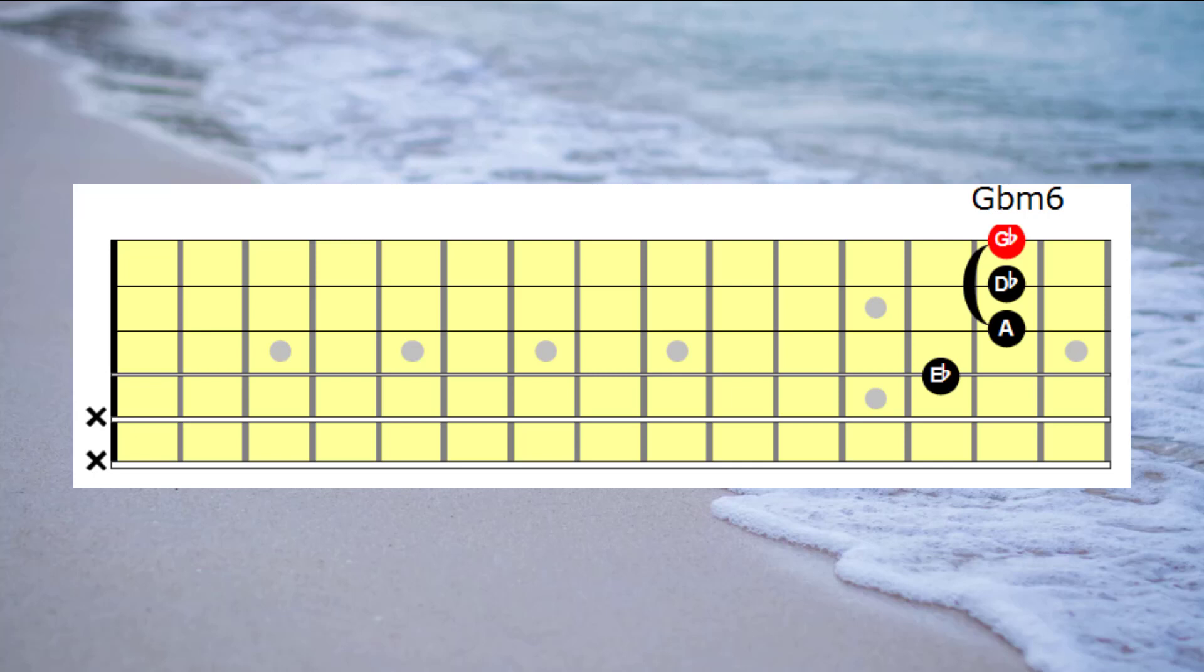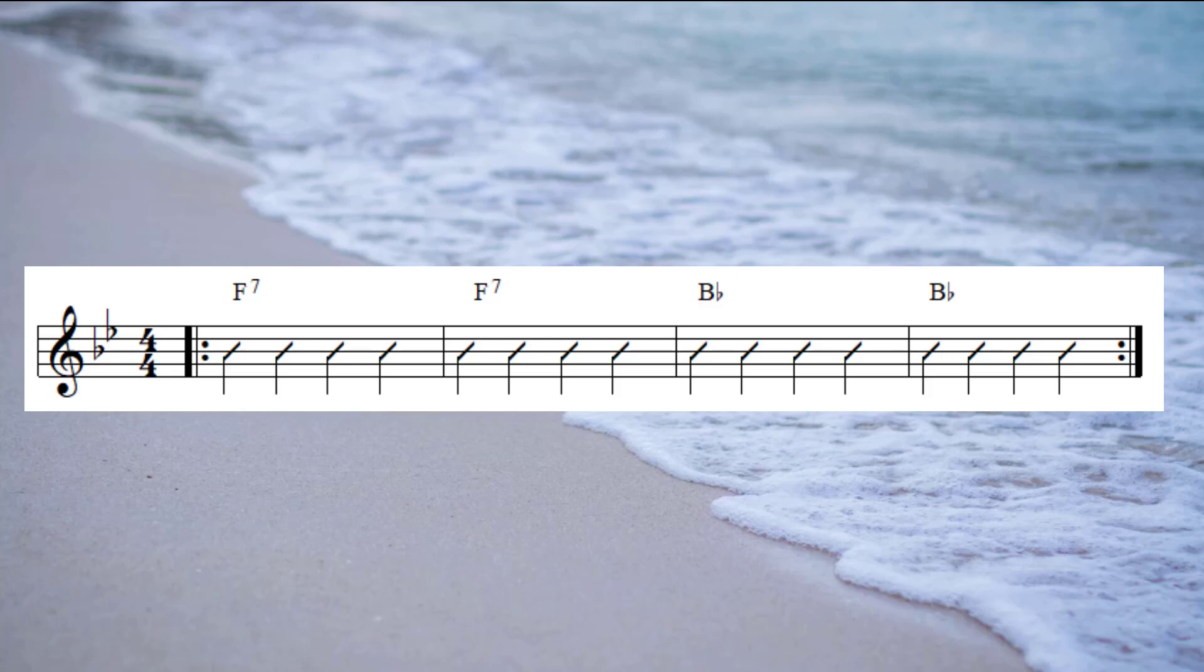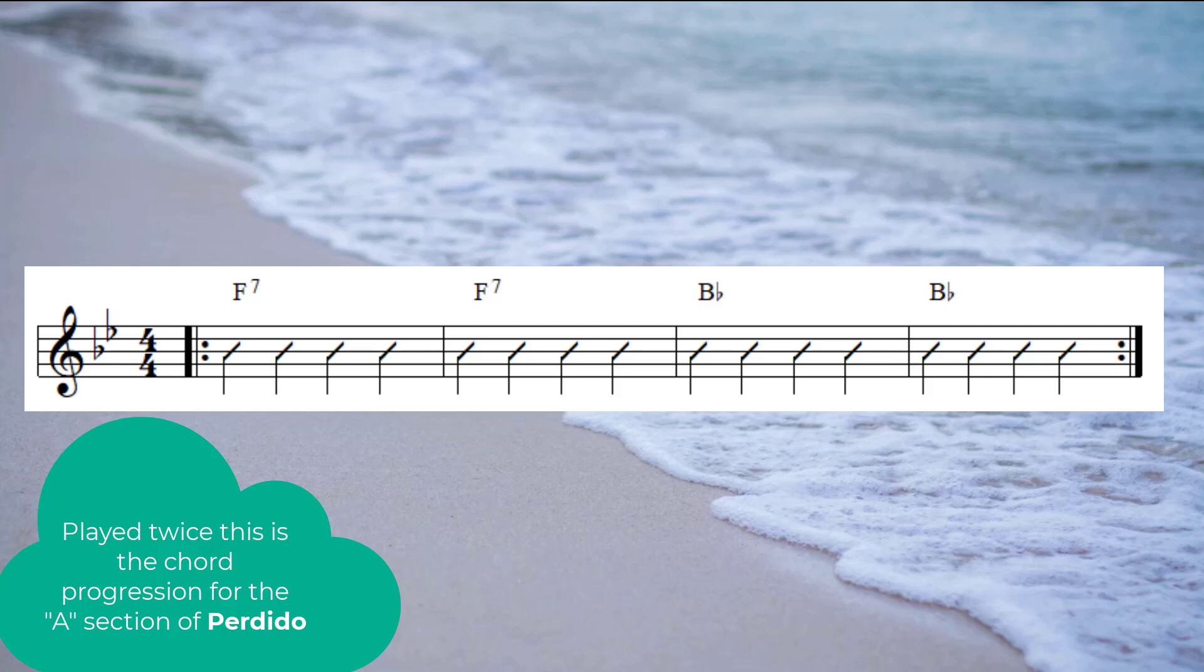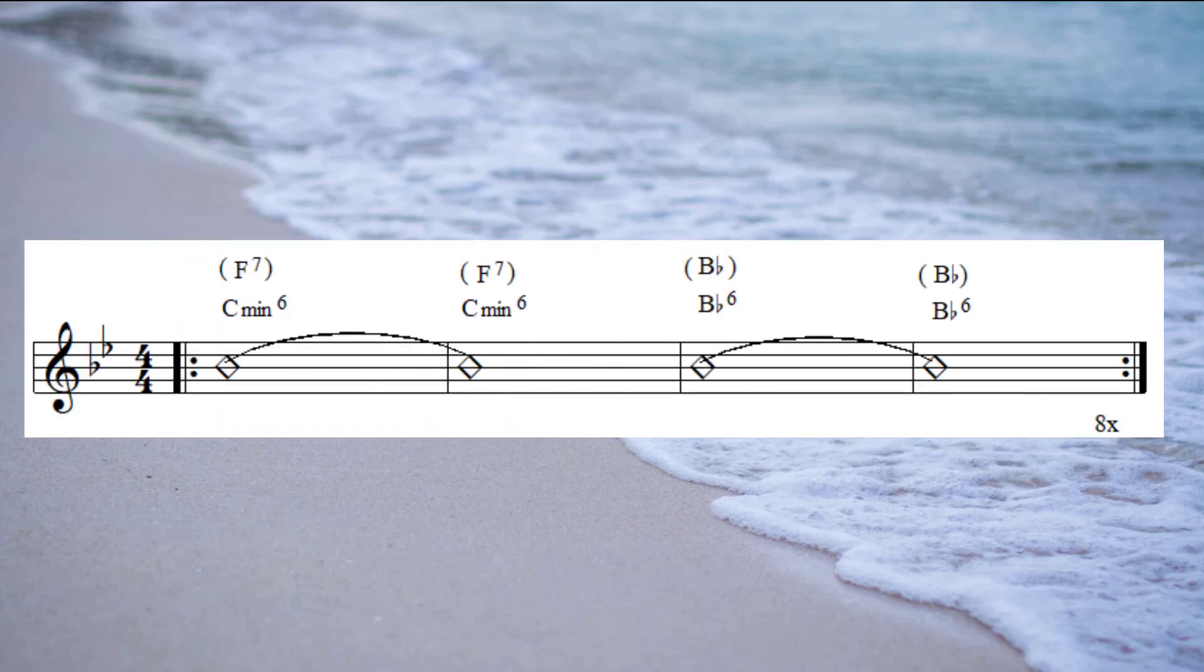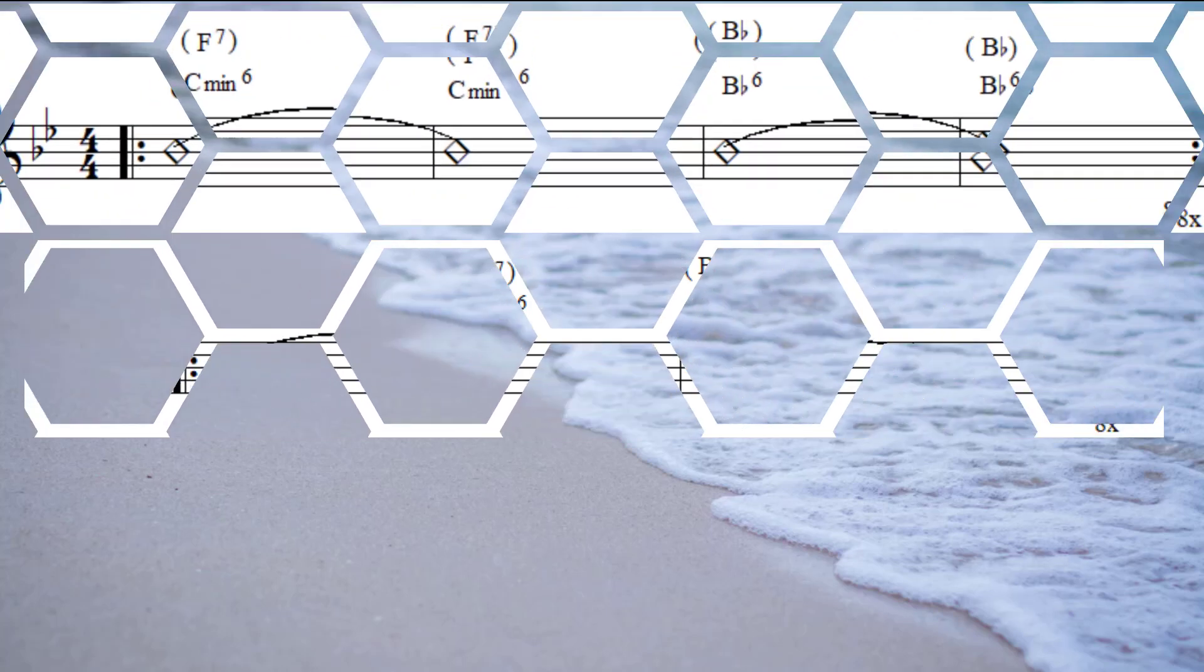And now let's have a look at a practical application of the type of things that we've been learning so far. So I'm going to put on a four bar chord progression that'll be two bars of F7th going to two bars of B flat. Now the band's going to be playing F7th, I'm going to be playing C minor 6th. When the background moves to B flat, I'm going to be playing B flat 6th. And I'm going to be moving up the neck of the guitar playing all the different inversions of C minor 6th, and then having that C minor 6th resolve to B flat 6th. Okay, here we go.